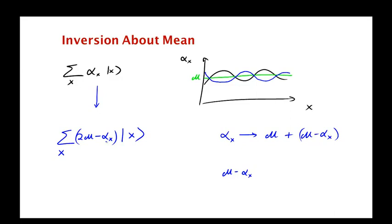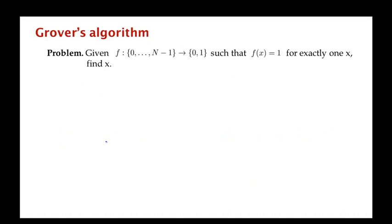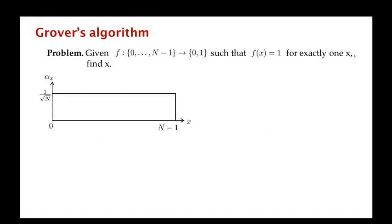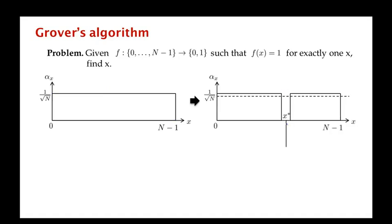We will see in the next video how to implement this transformation with a quantum circuit. For now, given these two operations, let's see how we actually solve the search problem. We first start with an equal superposition over all N items. Then we do a phase inversion: x*, the marked value, now has amplitude minus 1/√N instead of plus 1/√N.